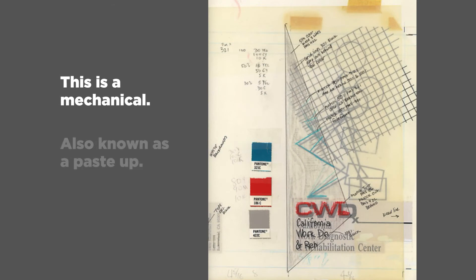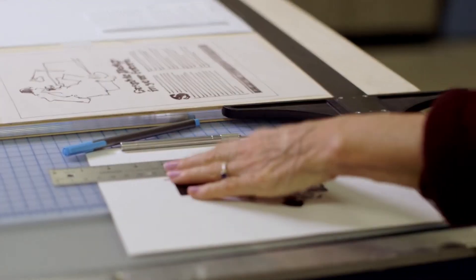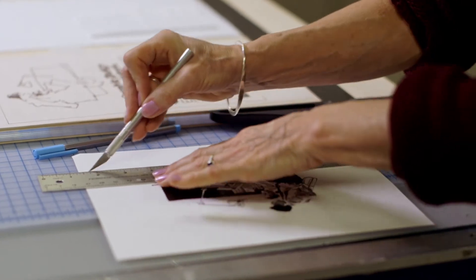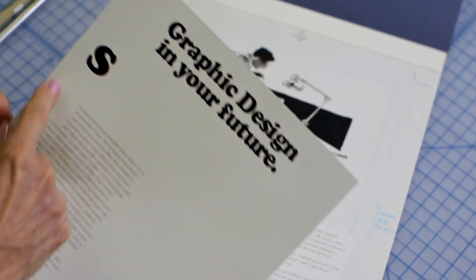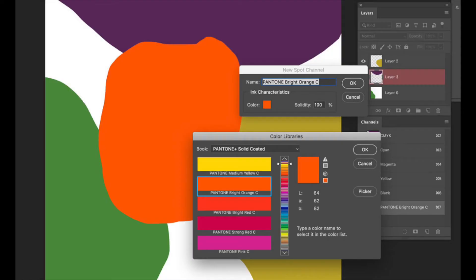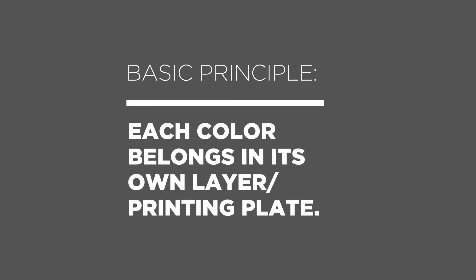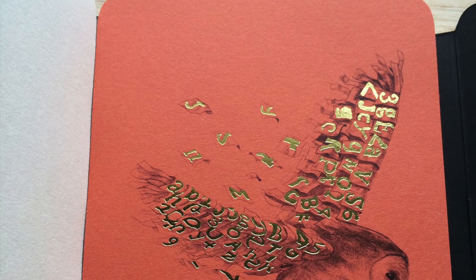How do we prepare files for spot color printing? In the days before Photoshop, designers did paste-up work and prepared layouts called mechanicals. These paste-ups acted as instruction guides for the printer — each color layer was made in black and white and assembled using overlays. Colors were specified by attaching Pantone swatches to the layers. Today we do these layers digitally, whether in Photoshop, Illustrator, or InDesign. The basic principle is that each additional printing color belongs in its own layer and printing plate.